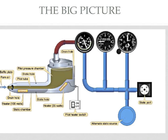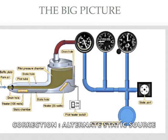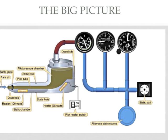If the static port were blocked for whatever reason, we can activate an alternate static source from within the cabin, which simply uses a different static source and provides pressure data to your airspeed indicator, vertical speed indicator, and altimeter. Because of the nature of the alternate static source, your altimeter will read slightly on the high side, and you'll have to refer to your POH while in flight to determine the small deviations in speed.